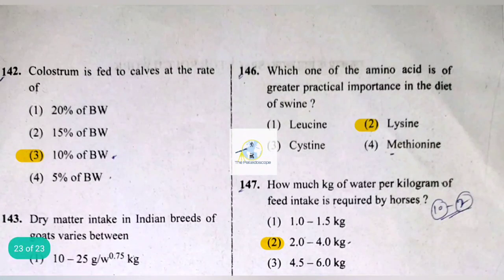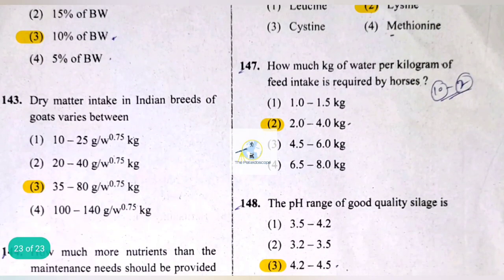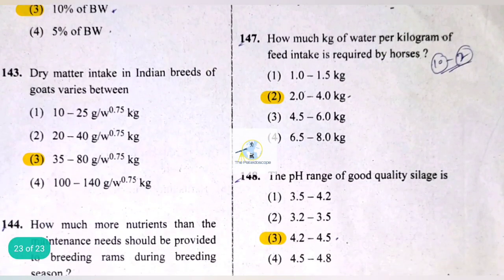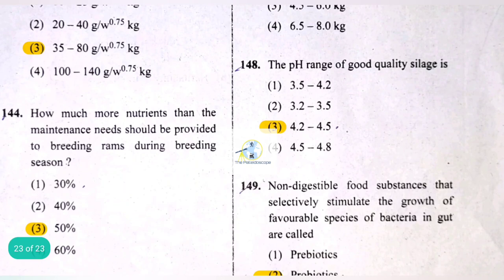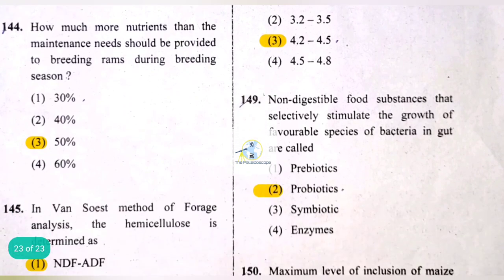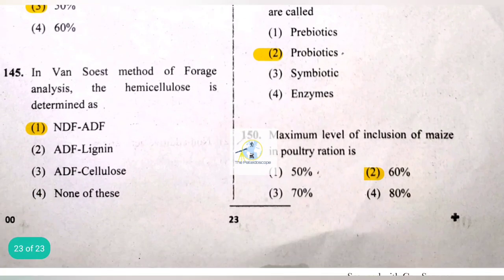The amino acid of greatest practical importance in the diet of swine is lysine. Horses require 2.0 to 4.0 kg of water per kg of feed intake. The pH range of good quality silage is 4.2 to 4.5. Non-digestible food substances that selectively stimulate the growth of favorable species of bacteria in the gut are called prebiotics. The maximum level of inclusion of maize in poultry ration is 60%.